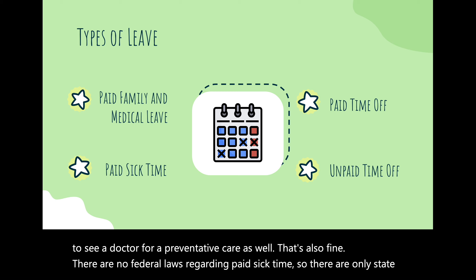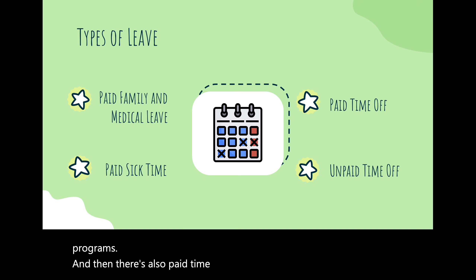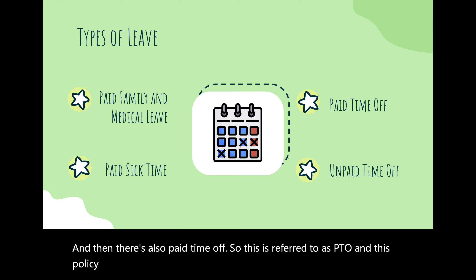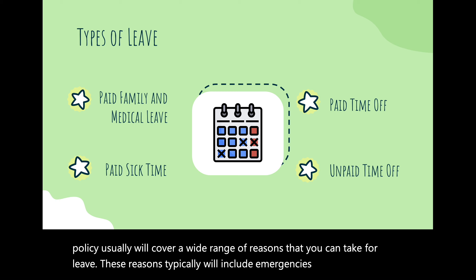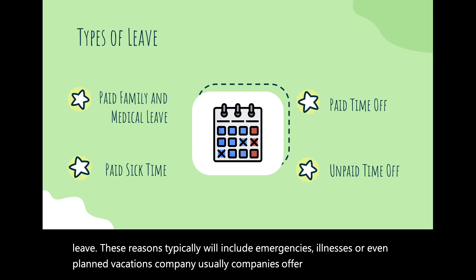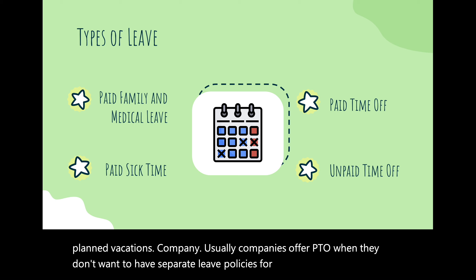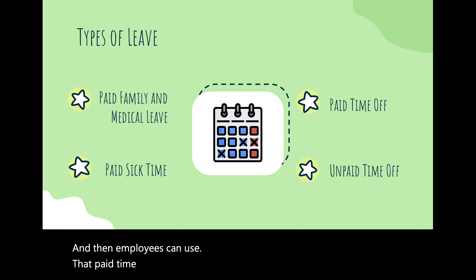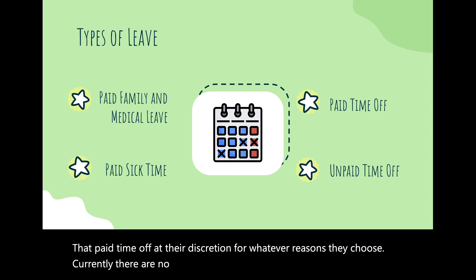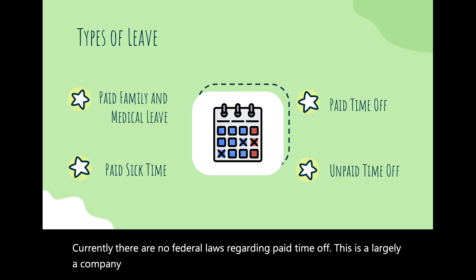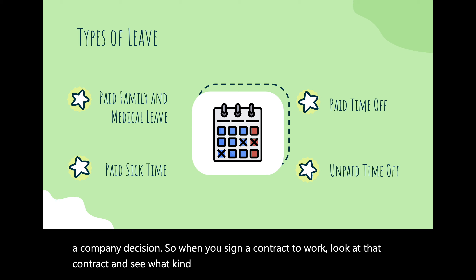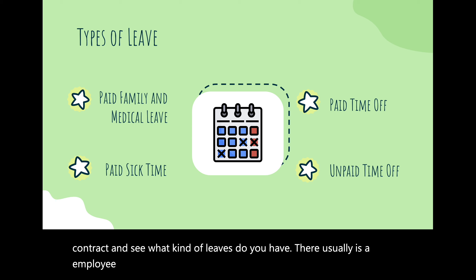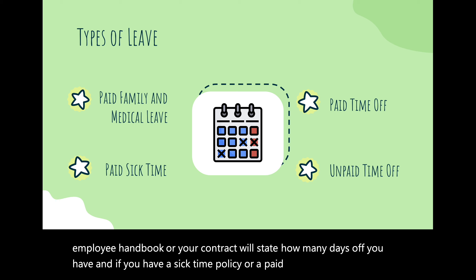There is also paid time off, referred to as PTO. This policy usually covers a wide range of reasons for leave, typically including emergencies, illnesses, or planned vacations. Companies often offer PTO when they don't want separate leave policies for vacation, sick time, and personal days — they lump it all under paid time off. There are no federal laws regarding PTO; it is largely a company decision. When you sign a contract to work, check what leaves you have, as your employee handbook or contract will state how many days off you have.